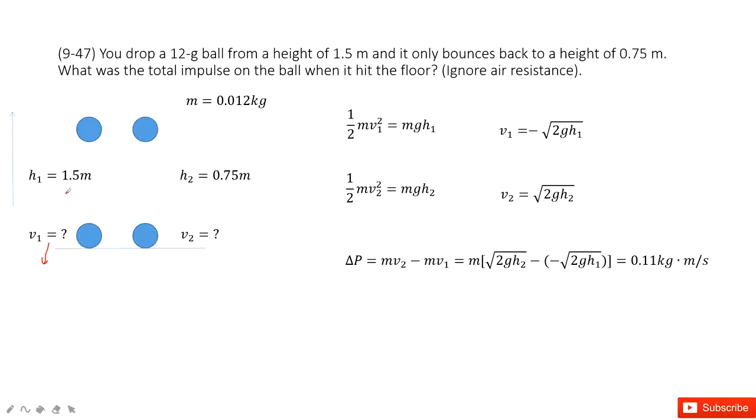So this is very easy. The energy is conserved. The final energy equals the initial energy. The kinetic energy, one-half mv1 squared, is the final energy equals initial energy. It's the potential energy, mgh1.